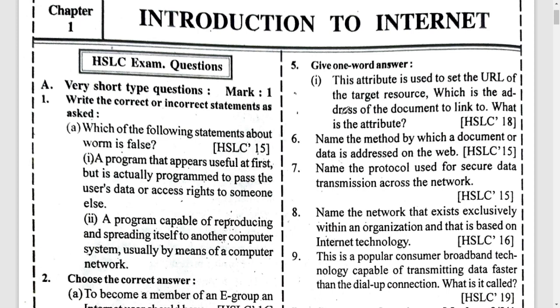The first question: write the correct or incorrect statement — which of the following statements is false about a worm? You have to know about a worm. A worm can reproduce by itself. The first option says a program appears first useful but actually passes the user's data — that is a Trojan horse, so this one is false about a worm.